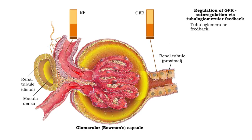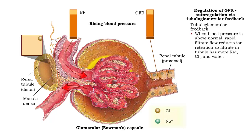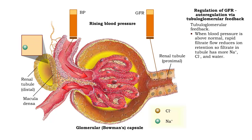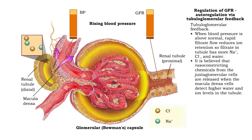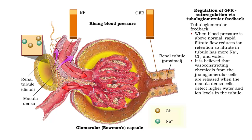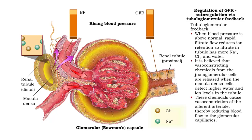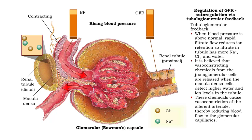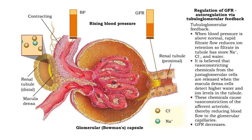The second mechanism is tubuloglomerular feedback. When blood pressure is above normal, rapid filtrate flow reduces ion retention, so filtrate in the tubule has more sodium ions, chlorine ions, and water. It is believed that when macula densa cells detect higher water and ion levels in the distal convoluted tubule, the release of vasoconstricting chemicals from the juxtaglomerular cells is promoted. These chemicals cause vasoconstriction of the afferent arterioles, thereby reducing blood flow to the glomerular capillaries. Glomerular filtration rate decreases.